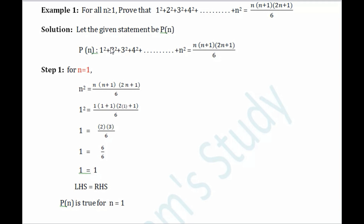You always start the proof by naming the given statement. Let the given statement be P(n). In Step 1, we need to check if the formula is correct for at least the first natural number. So we check the given formula for n = 1. To do this, we need to choose the nth term of both the left hand side and the right hand side.